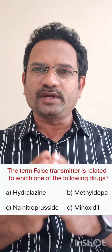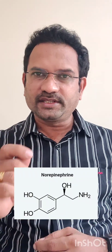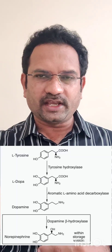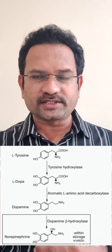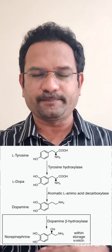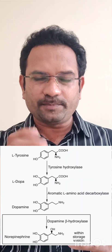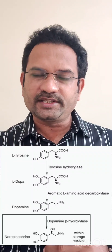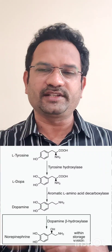This question is related to the adrenergic nervous system. In the adrenergic nervous system, the neurotransmitter is norepinephrine, which is biosynthesized at the end of the neuron. The synthesis starts with tyrosine. Tyrosine is converted to dopa with the help of the enzyme tyrosine hydroxylase. Dopa, with the help of the enzyme dopa decarboxylase, is converted to dopamine. Dopamine gets into a vesicle, and inside the vesicle, with the help of the enzyme dopamine beta-hydroxylase, it is converted to norepinephrine.